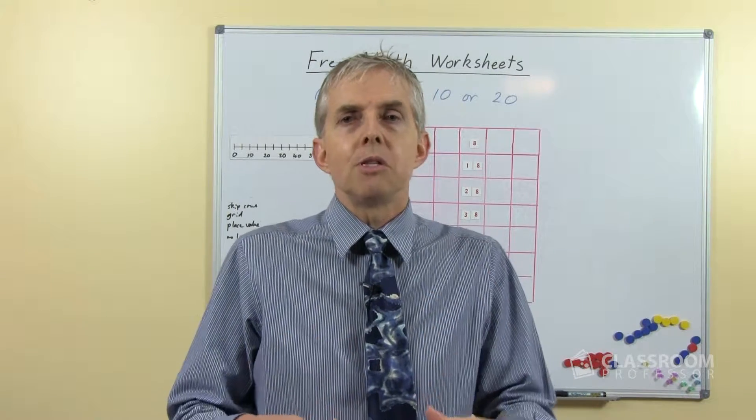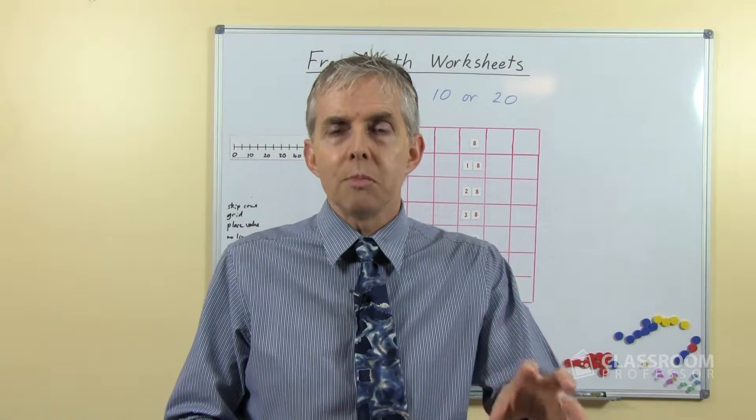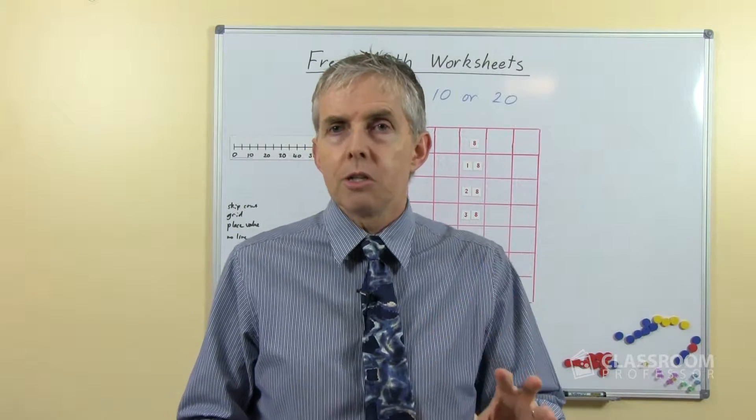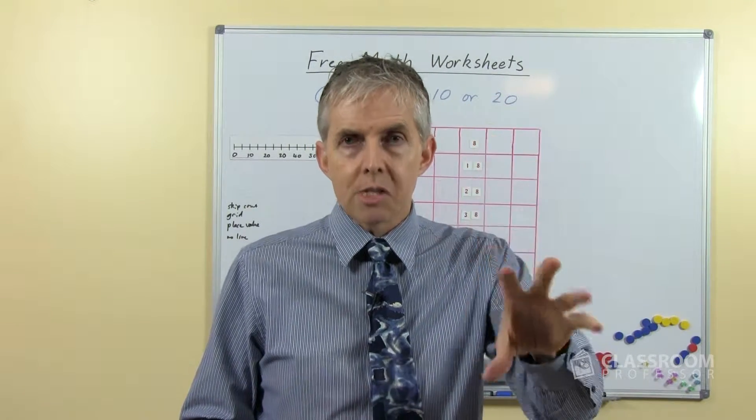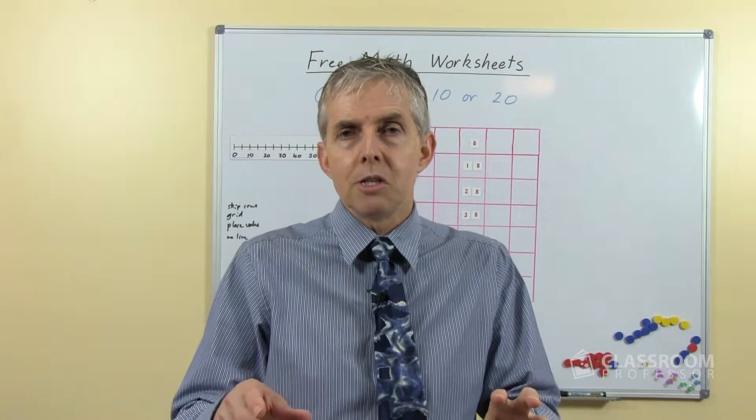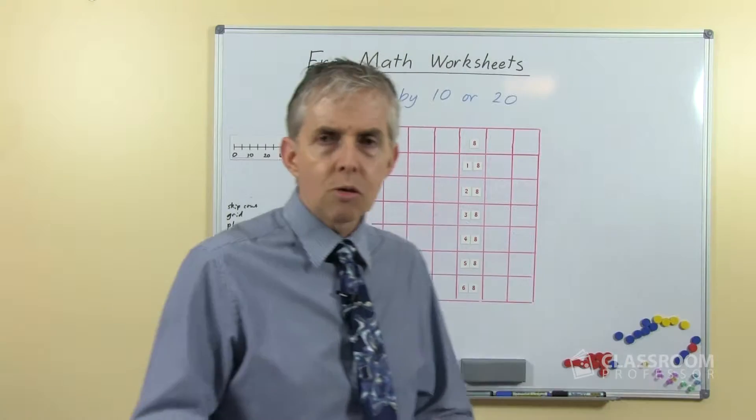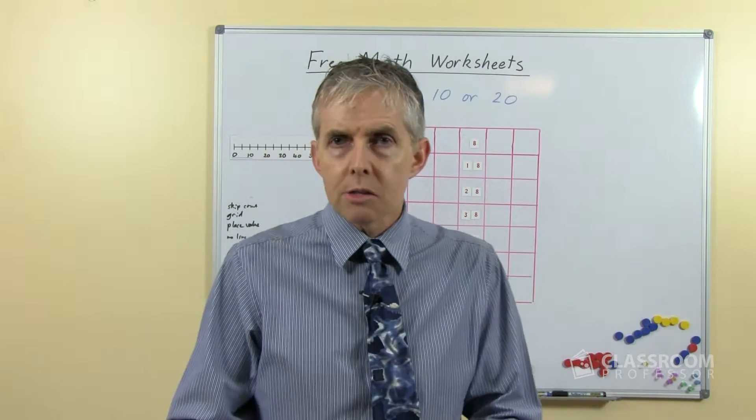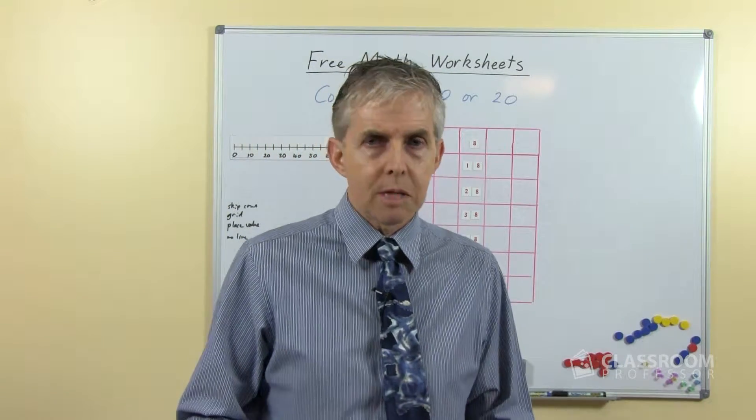And with the base 10 materials they'll see of course that the ones material is unchanged. In that example there's 6 every time, there's 6 ones, but the number of 10s changes, and how does that affect the number? And talk about how we say those numbers and how we write them down.